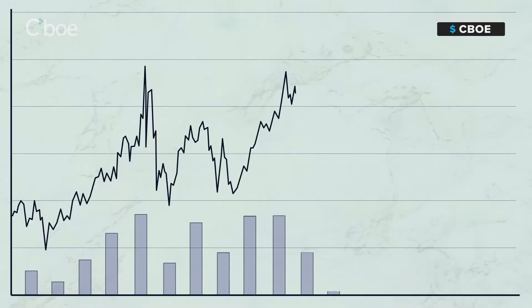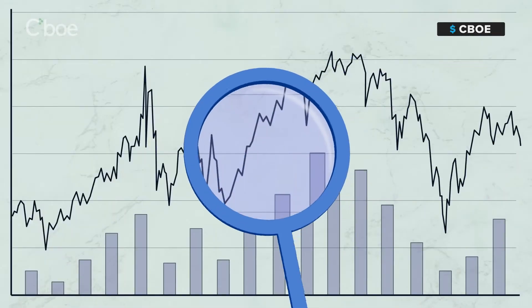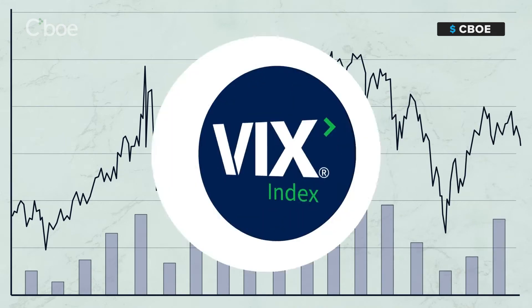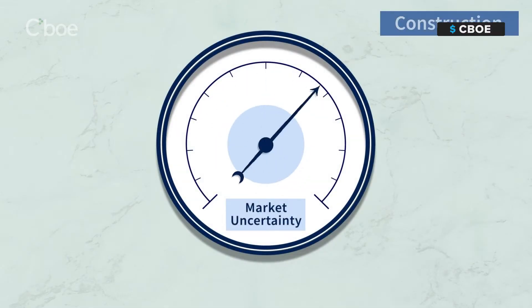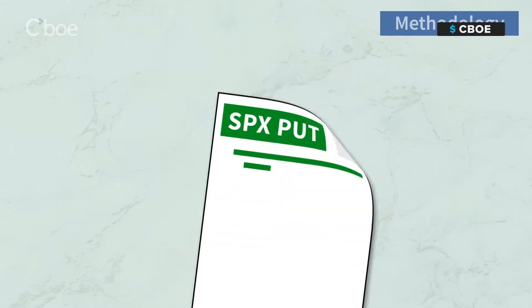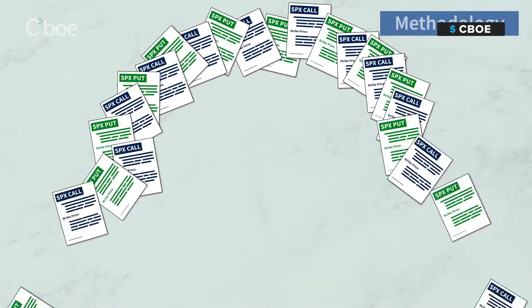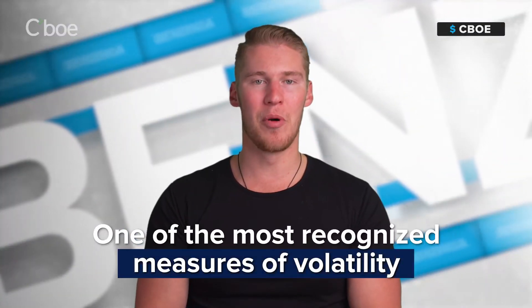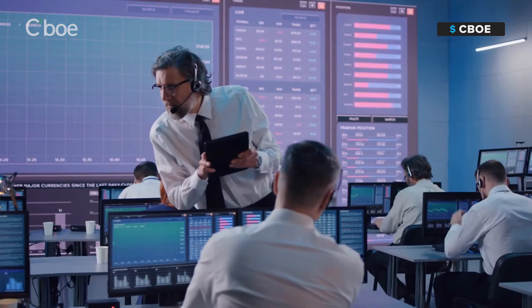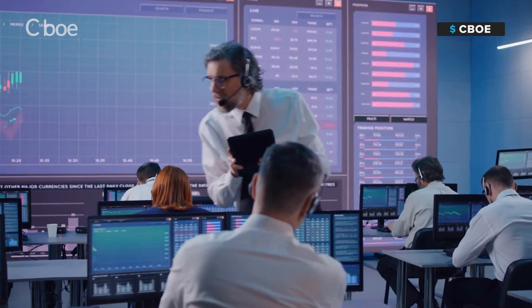The VIX index, created by CBOE, is a calculation designed to produce a measure of constant 30-day expected volatility of the U.S. stock market, derived from real-time mid-quote prices of S&P 500 index call and put options. On a global basis, it's one of the most recognized measures of volatility, widely reported by financial media and closely followed by a variety of market participants as a daily market indicator.